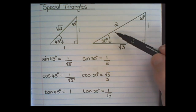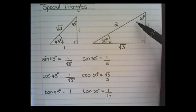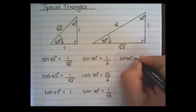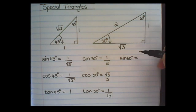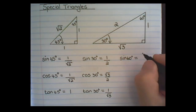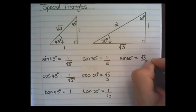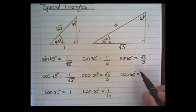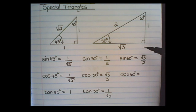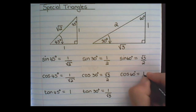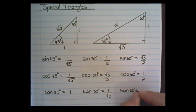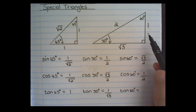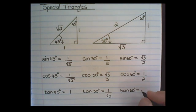Now we are done with the 30 degrees. We can also find the trig ratios at 60 degrees. Sine of 60 is opposite over hypotenuse, which is √3 over 2. The cosine at 60 degrees is adjacent over the hypotenuse, which is 1 over 2. And tan of 60 degrees is the opposite over the adjacent, so it's √3 over 1, which equals √3.